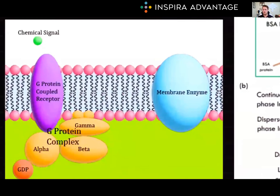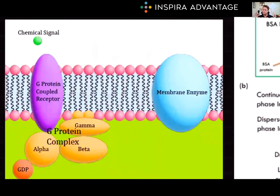Then we have G-protein-coupled receptors, or GPCRs. These are integral membrane proteins, meaning they span the membrane, and they are involved in signal transduction. The receptor is coupled with a G-protein, and when a ligand — the first messenger — binds to the receptor, it initiates the second messenger system, leading to a cascade of intracellular reactions. There is one key piece of information you need to have memorized about a GPCR for the MCAT: it spans the membrane seven times. It is tested quite frequently, so make sure you know that the GPCR spans a membrane seven times.